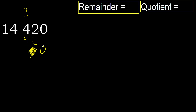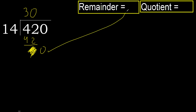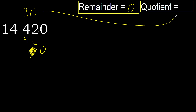Finish it with this number, therefore complete here. Always complete with 0. So 420 divided by 14 is 30.